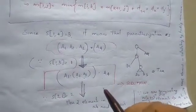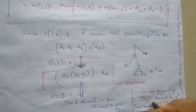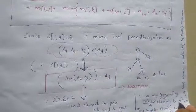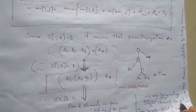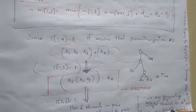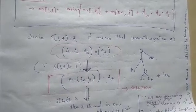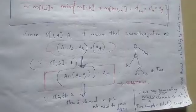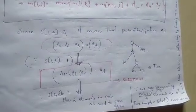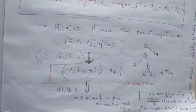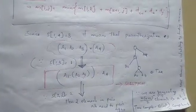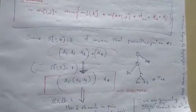The number of subproblems is n(n+1)/2, which is the upper bound. Multiplying all elements gives n cubed, so the time complexity of matrix chain multiplication is theta of n cubed. This is more efficient than divide and conquer. The overall complexity is theta of n cubed.